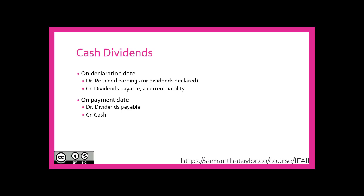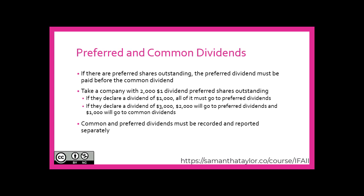For cash dividends, on the declaration date we would debit retained earnings or dividends declared — both debits to a shareholders' equity account — and we would credit dividends payable, which is a current liability, as long as we expect to pay it within the current year. The next date on which we would record a journal entry is the payment date, where we debit (remove) dividends payable and credit cash.